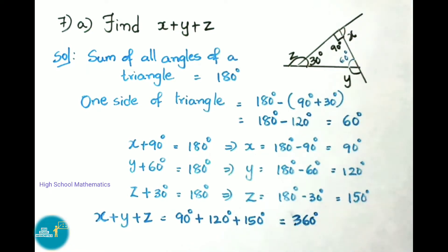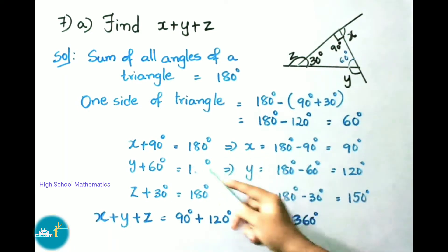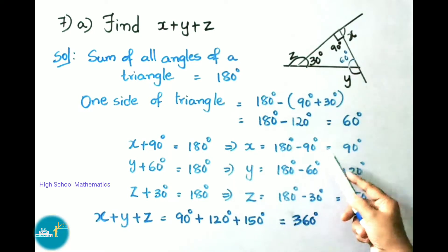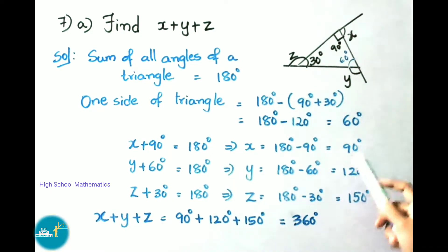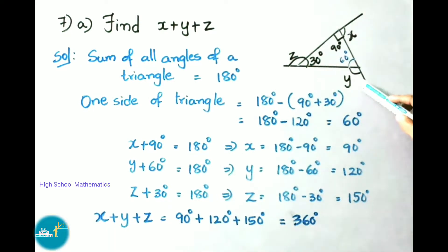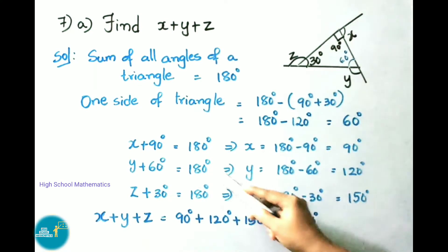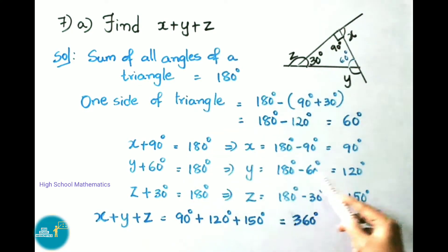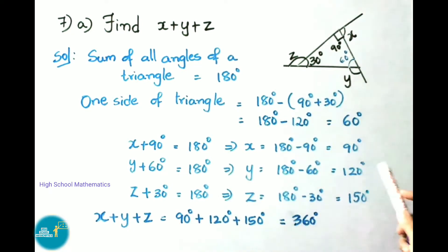Now we find x, y, and z. Since x and 90° form a linear pair: x + 90 = 180, so x = 90 degrees. Since y and 60° form a linear pair: y + 60 = 180, so y = 120 degrees.